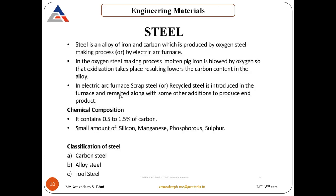Another method of producing steel is the electric furnace. In this, we use old scrap or recyclable steel. It is put in the furnace, remelted with some additives to form steel. The main composition of steel is around 0.5 to 1.5% carbon, and then small amounts of silicon, manganese, sulfur and phosphorus. The major constituent is iron; the rest are in smaller percentages.